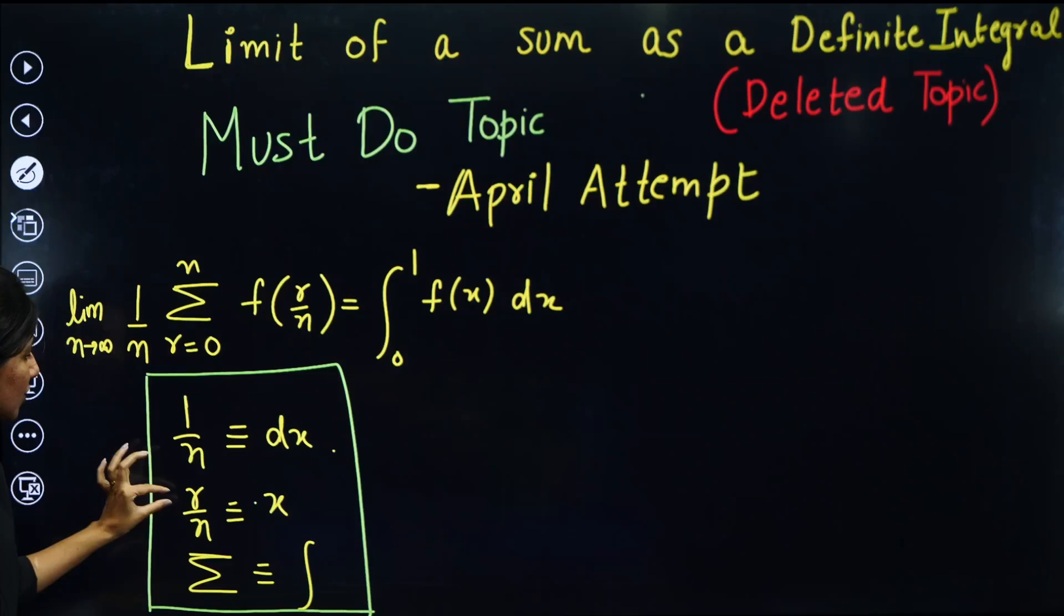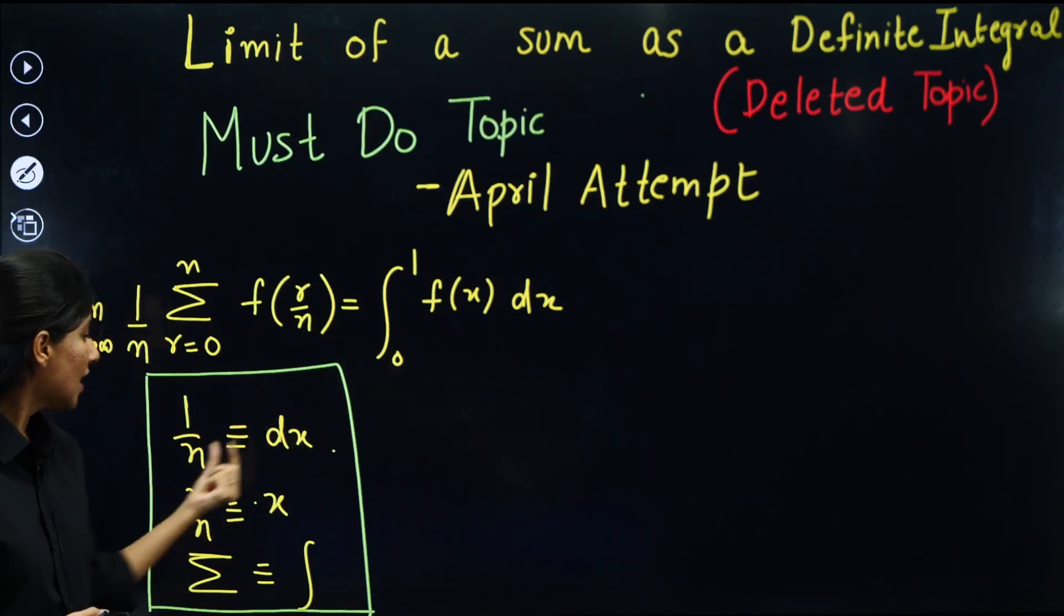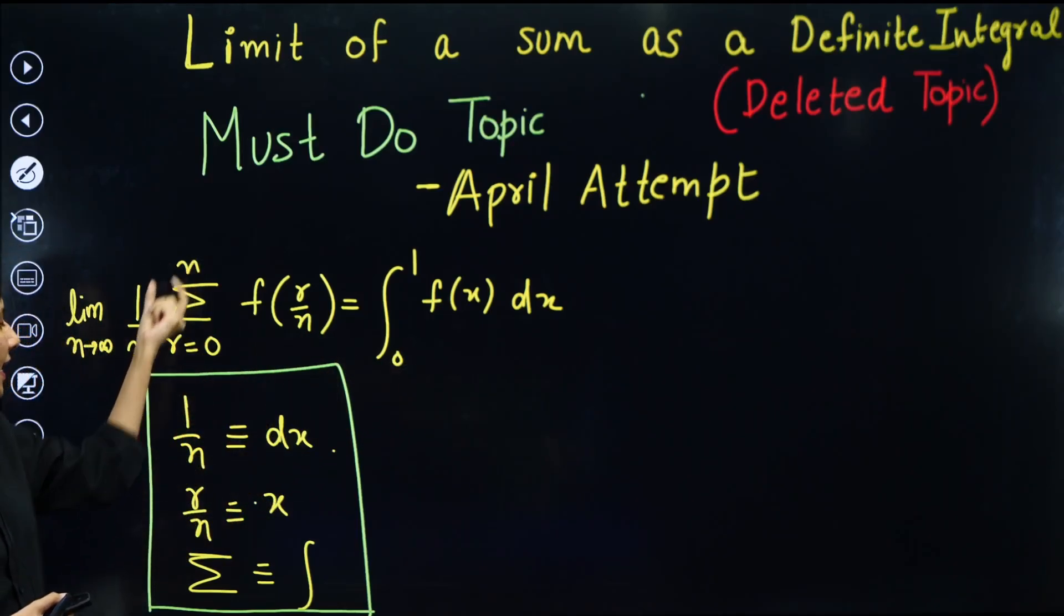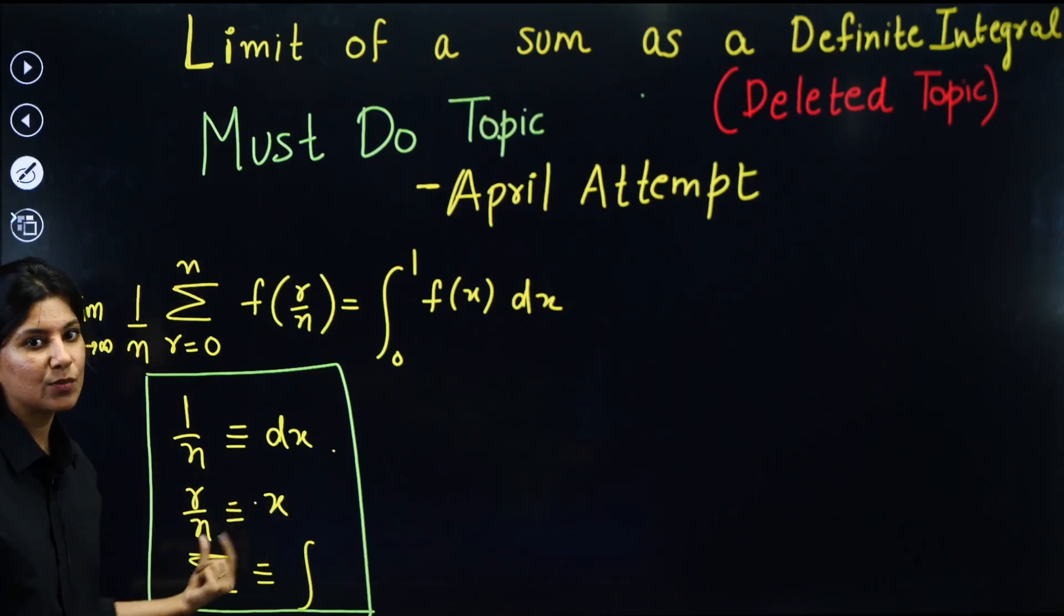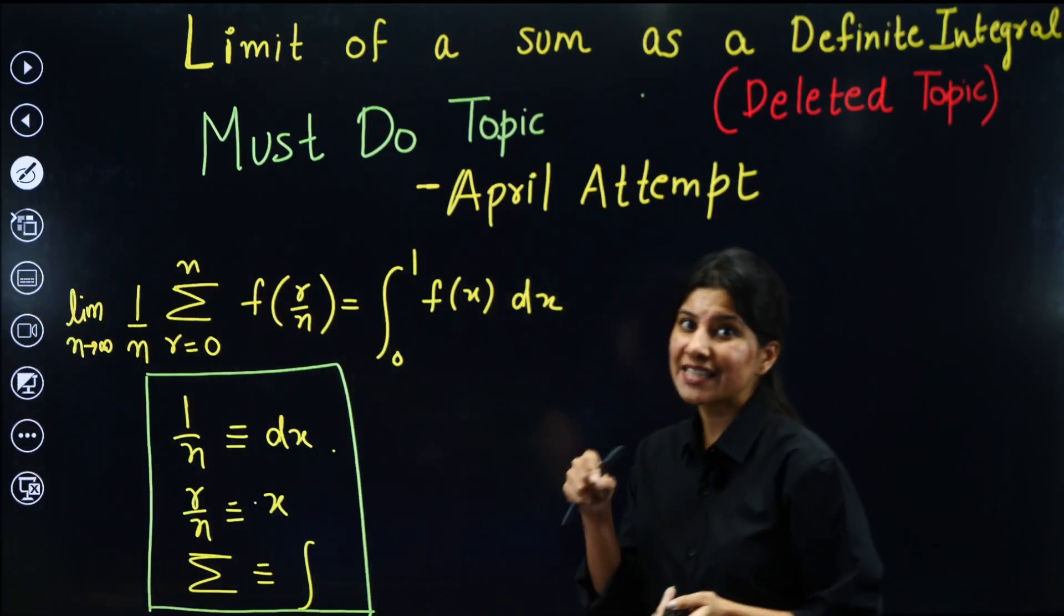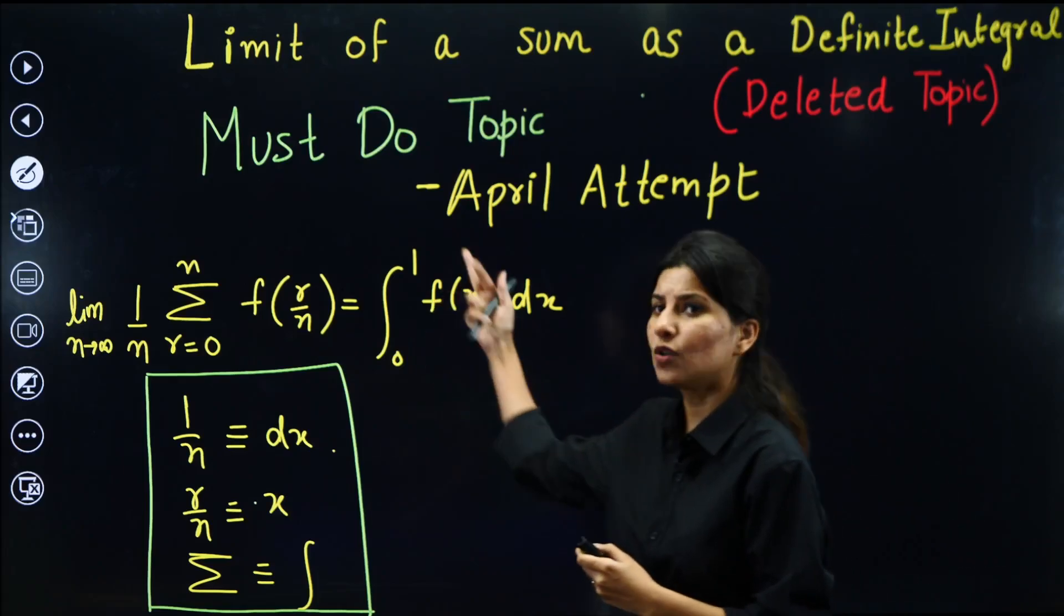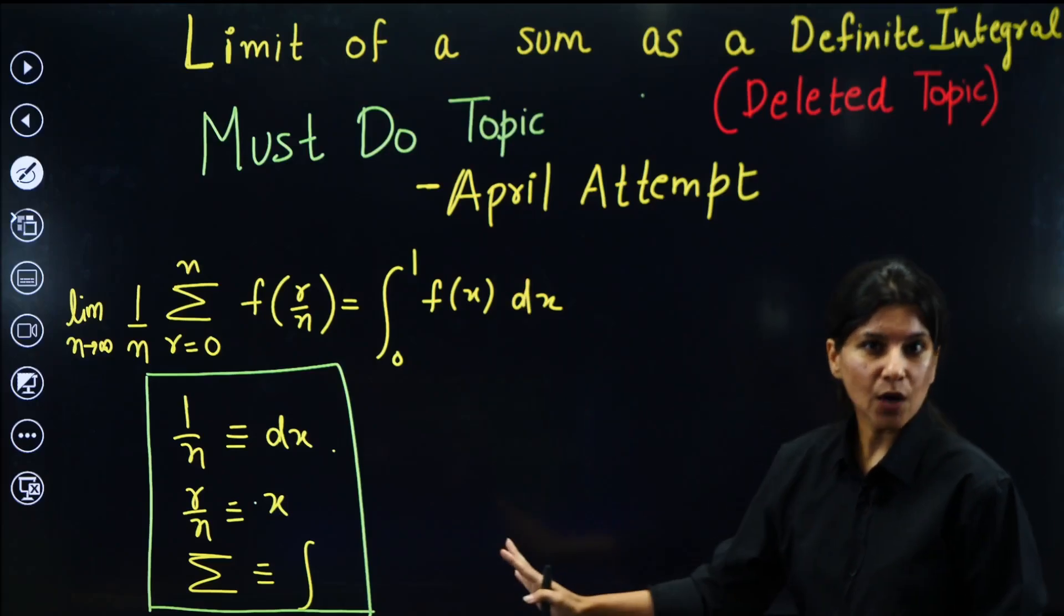How to know the limits? To know the limits, you just have to use R by N. So put R equals 0 over here. So 0 by N, that is 0. So lower limit will be 0. What about upper limit? Put R equals upper limit N. N by N, that is x equals 1. So 0 to 1. Please calculate the limits carefully. Most of the time it is 0 to 1. But sometimes it is 0 to 2, 0 to 3 as well.